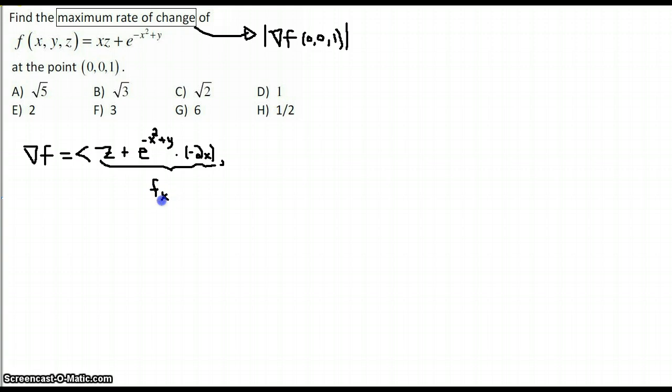Now we need the partial derivative with respect to y. The first term doesn't have any y's in it. The second term is exponential, so e to the negative x squared plus y. But when it comes time to do the chain rule for that one, it's just multiplied by 1.